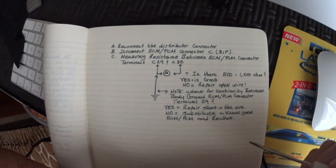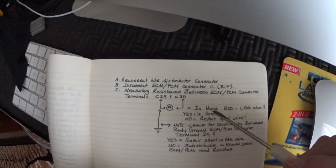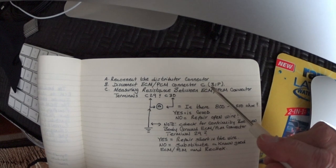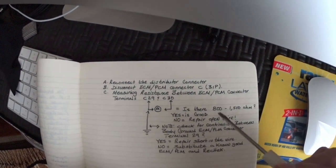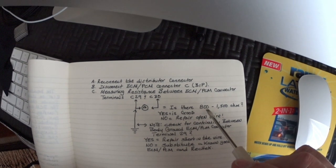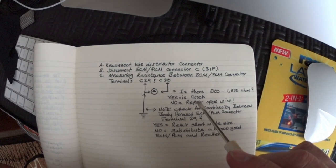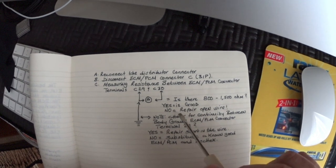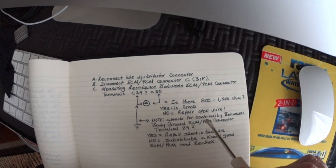If the distributor passed the test, reconnect the connector back to the distributor, then disconnect the connector at the PCM/ECM and measure the resistance between terminals 29 and 30. We should have the same resistance as measured physically at the distributor — 800 to 1500 ohms. If it is within spec, no repair is needed. If not, repair the open or damaged wire.